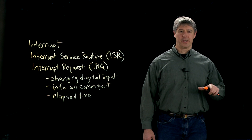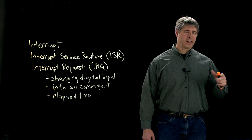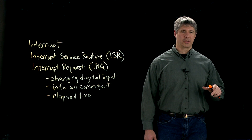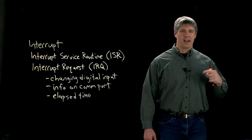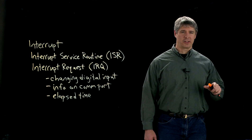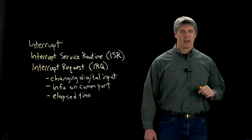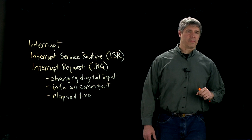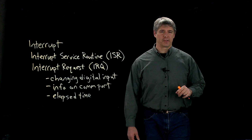In the interrupt service routine, we read the position of the motor, calculate the new control signal, send it to the amplifier, and then exit back to whatever the CPU was doing before. That's an example of an interrupt service routine.